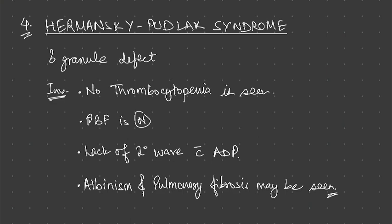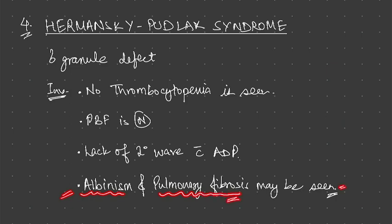Fourth is Hermansky-Pudlak syndrome. There is a defect in delta granules. Granules contain many factors helpful in recruiting and activating other platelets; if there is a delta granule defect, there will be defective platelet function. There is no thrombocytopenia and PBF is normal. There is lack of a secondary wave with ADP — both primary and secondary waves of aggregation must be present for normal platelet function, but with delta granule defect the secondary wave is absent. Additional features are albinism and pulmonary fibrosis.